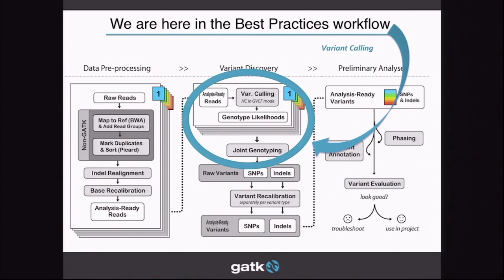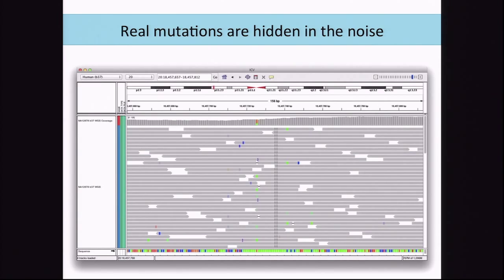We are here in the best practices pipeline right after data preprocessing — we have our analysis-ready reads and we are ready to variant call. The reason we need algorithms to do variant calling is because sequencers produce a lot of data that's really noisy. In this IGV screenshot you can see there seem to be a lot of different mutations, but we don't know whether it's machine artifact or a real variant.